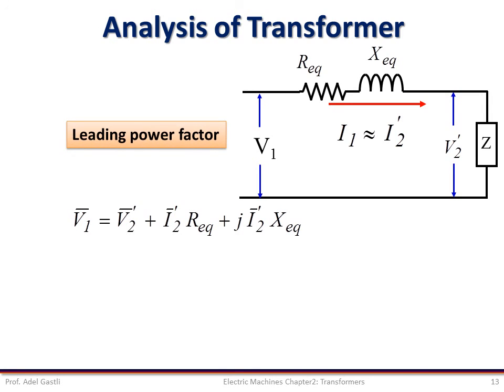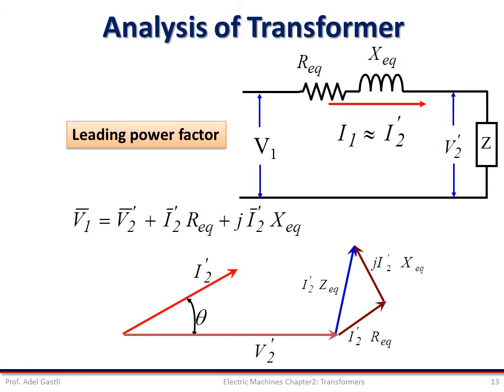We can follow the same procedure and see what happens when the load has a leading power factor. As usual, we start by drawing the load terminal voltage V'2 as the reference voltage with zero phase angle. Then we draw the load current, which in this case is leading the voltage by angle theta. Then we draw I'2 R_eq and jI'2 X_eq and deduce I'2 Z_eq. Finally, we can draw V1 and find its amplitude and phase angle delta. Note that the analytical calculations using the complex number representation of impedance, voltage, and current should lead to the same results.